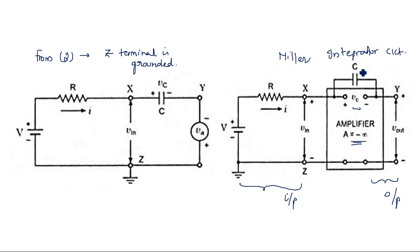Now the circuit is again modeled by making terminal y grounded. In order to create the Bootstrap circuit, what we are doing is making terminal y grounded. So how do we make y grounded? In the Miller circuit, y was not grounded; now for the Bootstrap circuit we ground terminal y.